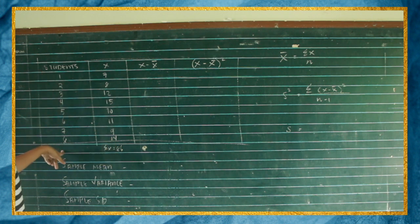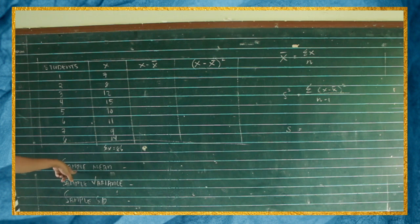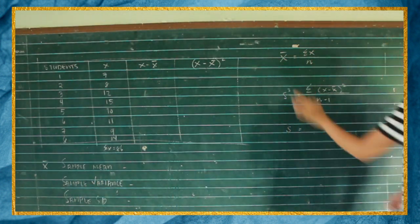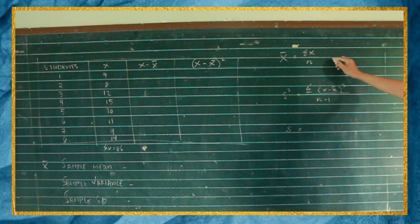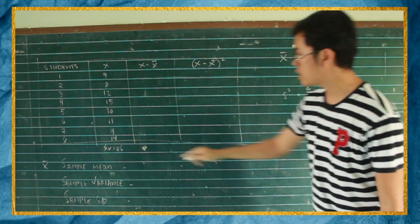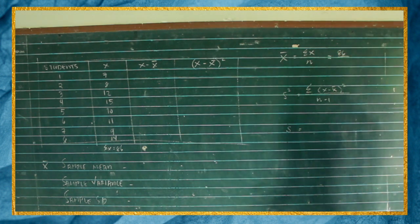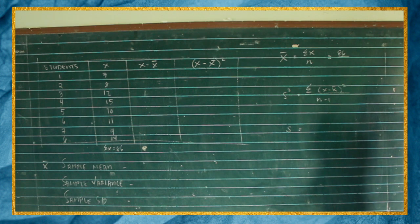Ilan ang students natin? Siyempre, 8. So that is our n. So to find the sample mean, or ganyang symbol, eto yung formula nya. Sample mean is equal to summation of x over n. So ano ba yung summation of x natin? 86. Ilan ba yung n natin? 8. So we have 8 students.